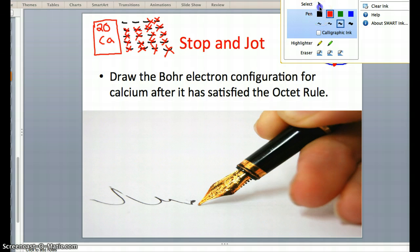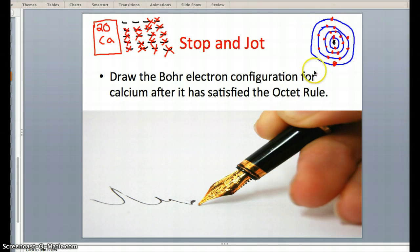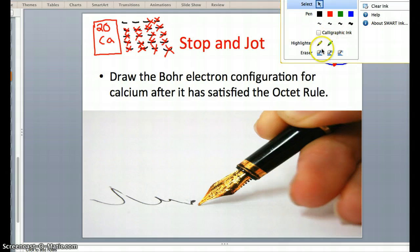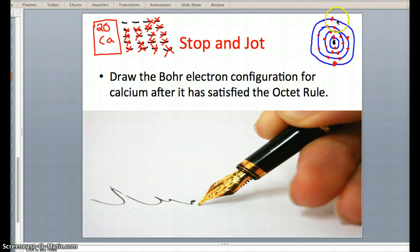Now given that our outer shell once again has only 2 electrons, it's much easier to lose these 2 electrons rather than gain 6 more. So calcium will give away its 2 electrons, allow them to be stolen, and satisfy the octet rule as seen here.